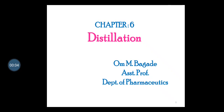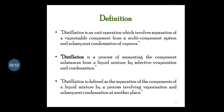Today we will focus on Chapter 6 - distillation. Distillation is a unit operation which involves the separation of a vaporizable component from a multi-component system and subsequent condensation of vapors. It has been practiced as early as 3500 BC for isolation of odoriferous principles from flower petals and leaves. In pharmaceutical engineering, distillation plays a very crucial role and is considered as one of the essential mass transfer processes.